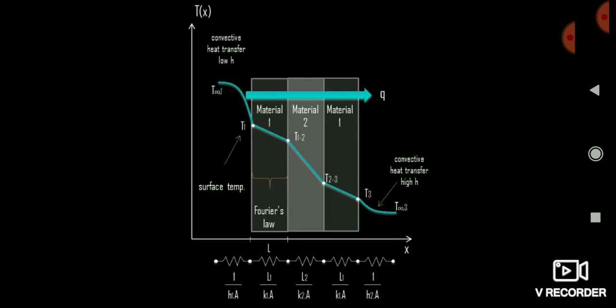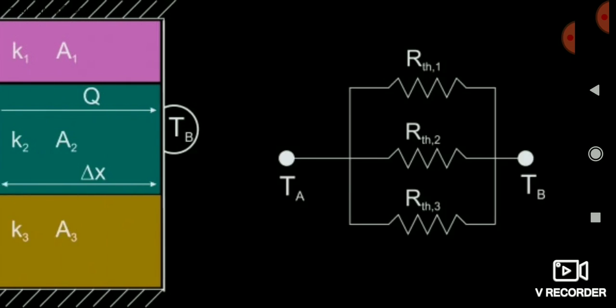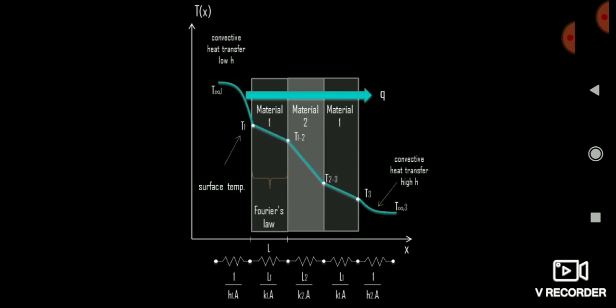Remember this case: when conduction and convection both take place simultaneously with materials in series, the net resistance is simply the sum of all individual resistances. Now, when materials are arranged in parallel, the formula is different: 1/R_net = 1/R1 + 1/R2 + ... + 1/Rn.